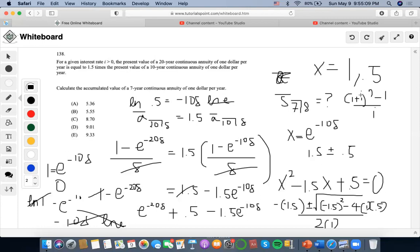So if it were in continuous format, it would be e to the number of years, because it's accumulating. So it's not a negative exponent anymore, as opposed to what would happen in a present value sequence.